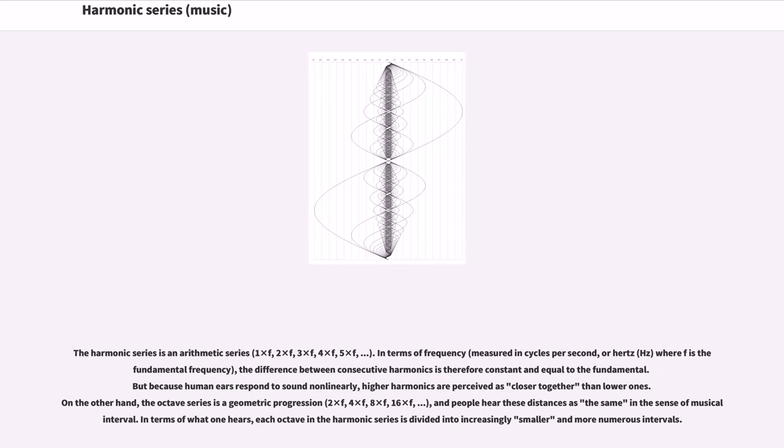The harmonic series is an arithmetic series: one times f, two times f, three times f, four times f, five times f, in terms of frequency measured in cycles per second or hertz, where f is the fundamental frequency. The difference between consecutive harmonics is therefore constant and equal to the fundamental. But because human ears respond to sound non-linearly, higher harmonics are perceived as closer together than lower ones. On the other hand, the octave series is a geometric progression: two times f, four times f, eight times f, sixteen times f, and people hear these distances as the same in the sense of musical interval.